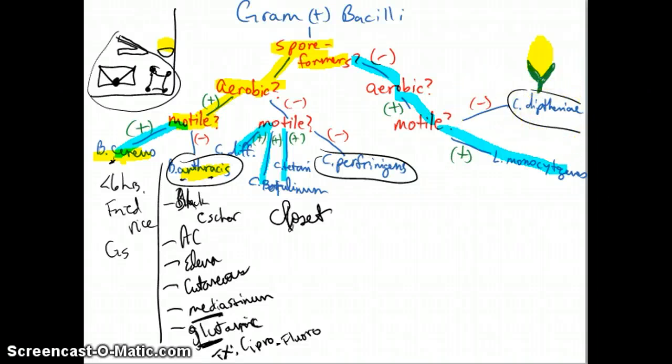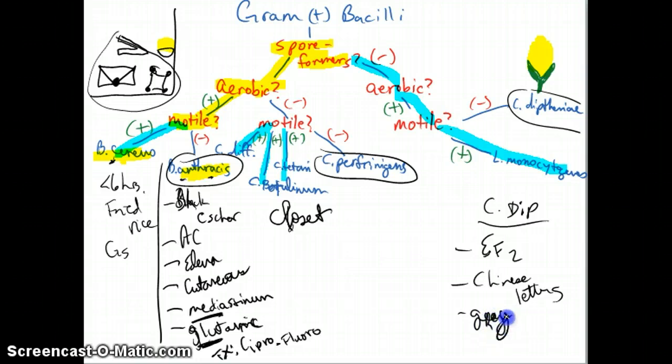So Corynebacterium, like we said, it is non-motile. Since it is non-motile, it's going to be over here on the table. Let me just say C-dip - notice I'm not saying C-diff, but C-dip. This one's going to work by inhibiting elongation factor 2. It's going to look like Chinese letters under microscopy. Elongation factor 2 - it does not let your protein elongate, so it stops protein synthesis. You're going to have the gray pseudomembranous scrolls.